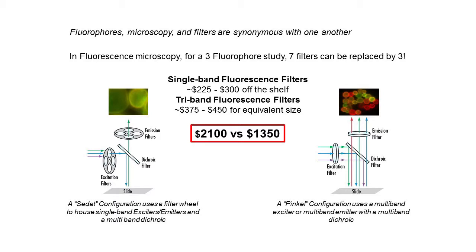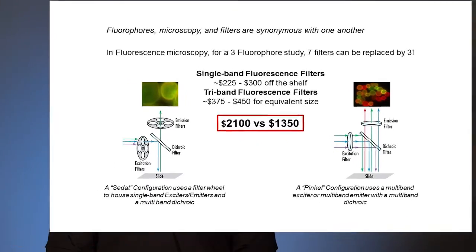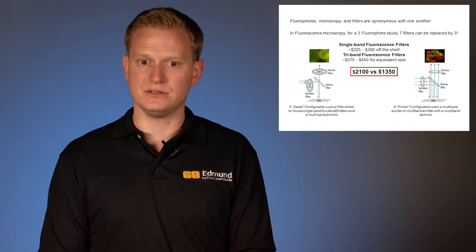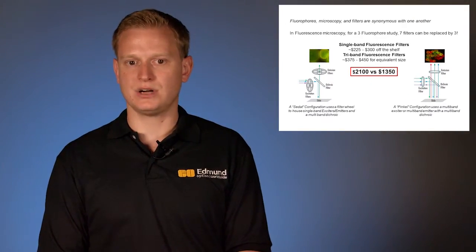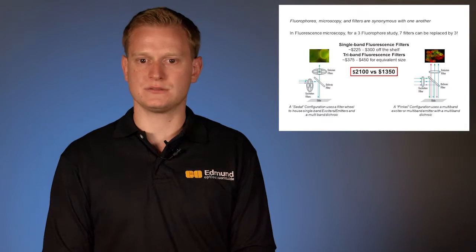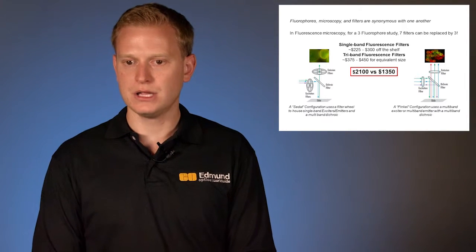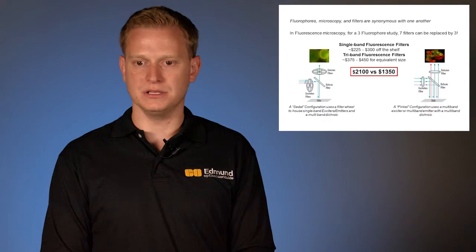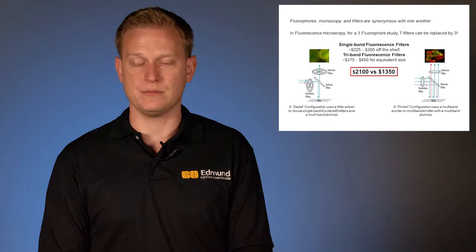Single band fluorescence filters can range anywhere from $225 to $300 off the shelf, whereas a tri-band fluorescent filter can range anywhere from $375 to $450. So in this study, if you consider a SEDAT configuration that uses seven different single band filters versus a Pinkel configuration that uses three multi-band tri-band fluorescence filters, the math comes out to a comparison of $2,100 versus $1,350. So significant savings in the long run, even though you're using more expensive optics.